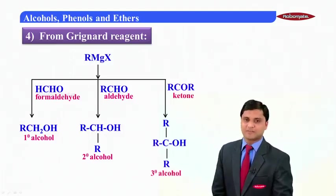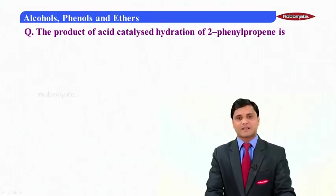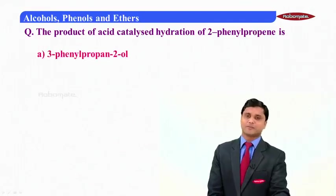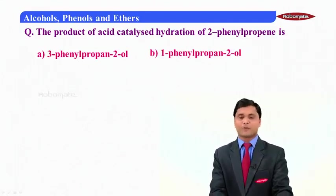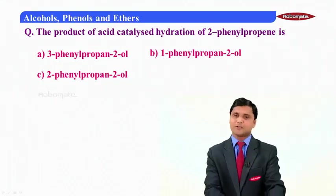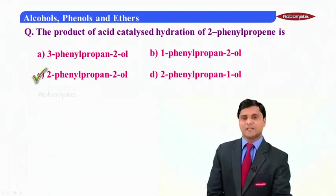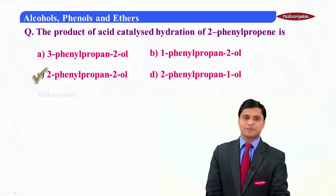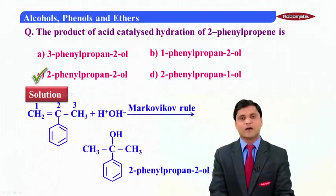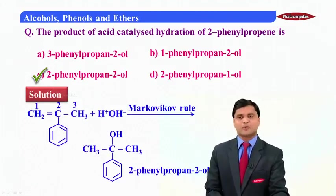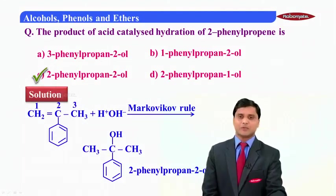Question: The product of acid-catalyzed hydration of 2-phenylpropene is — option A: 3-phenylpropan-2-ol, option B: 1-phenylpropan-2-ol, option C: 2-phenylpropan-2-ol, option D: 2-phenylpropan-1-ol. The correct answer is C, 2-phenylpropan-2-ol. By Markovnikov's rule, H⁺ goes to the first carbon atom and OH⁻ goes to the second carbon atom, giving 2-phenylpropan-2-ol.